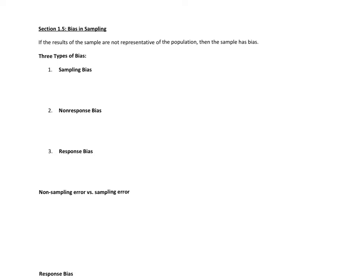The first types are the three we see here: sampling bias, non-response bias, and response bias. Let's go through these one by one.